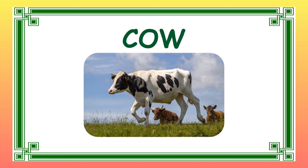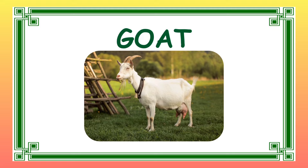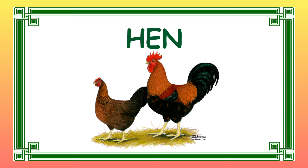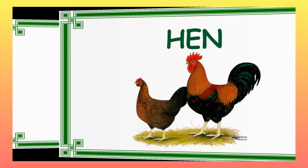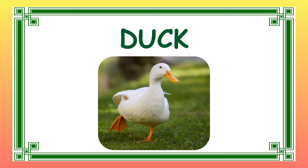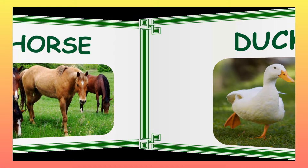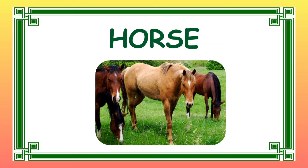Cows are raised mainly for their milk and meat. Goats are versatile animals raised for their milk and meat. Chickens are one of the most widely raised poultry birds. They are kept for their eggs and meat. Ducks are also raised for their eggs and meat. They are also known for their ability to control pests in rice fields. Horses were traditionally used as work animals on farms, but today they are kept for recreation, riding, racing and sports.